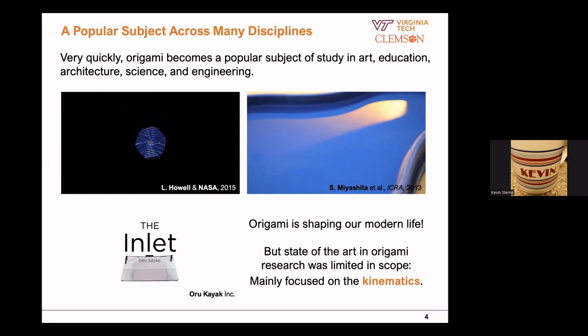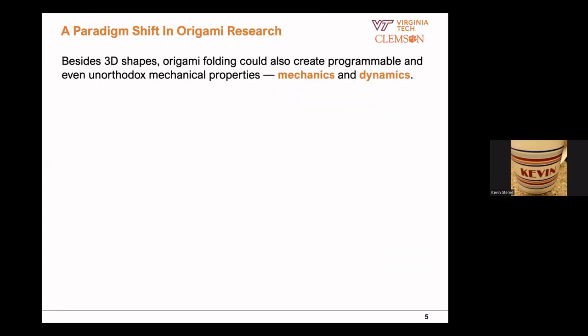When I started my job at Clemson University, about six and a half years ago, the scope of origami research had been limited to kinematics — people only used the geometry of folding to achieve their functions, without thinking much about material deformations, stress relationships, or dynamic responses coming from folding. This is where my research comes in, because it turned out that origami is not only a very powerful method to create beautiful shapes — it is also a very powerful method to create unique and even unorthodox mechanical properties. So I'm talking about mechanics and dynamics.